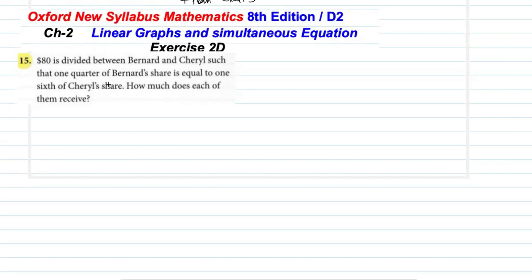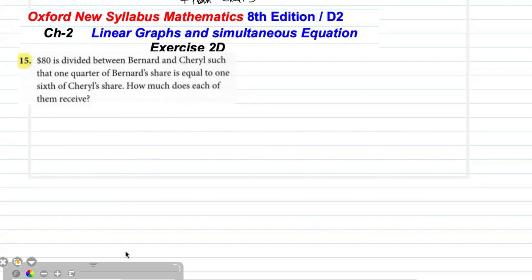Whenever you need to calculate an unknown value, we consider those unknown values as x and y. With the help of x and y, we will form two equations here and solve them simultaneously, and from that we will get our answer.